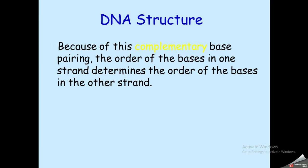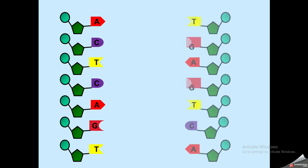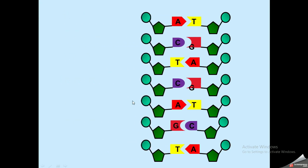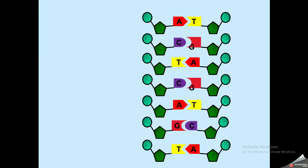The two strands of the double helix are complementary. If one strand has adenine, the other must have thymine. Every cytosine pairs with guanine, every thymine pairs with adenine. This complementarity means that if we know the sequence of nucleotides of one strand, we can determine the sequence of the second strand.